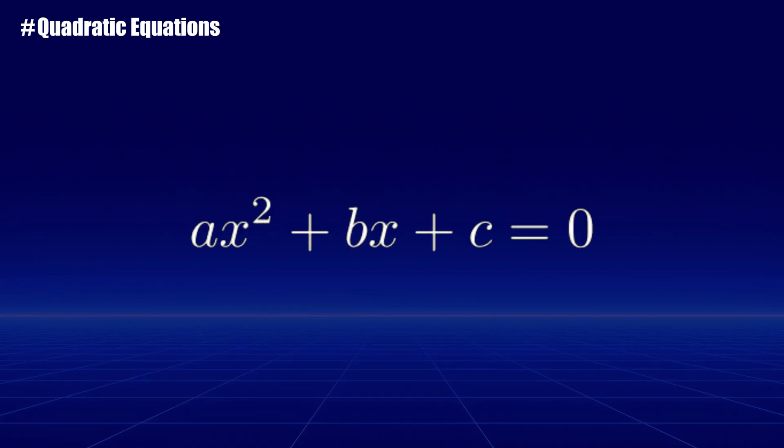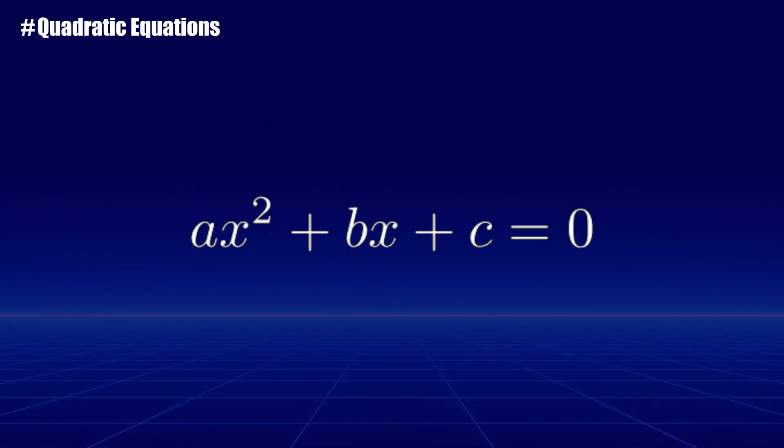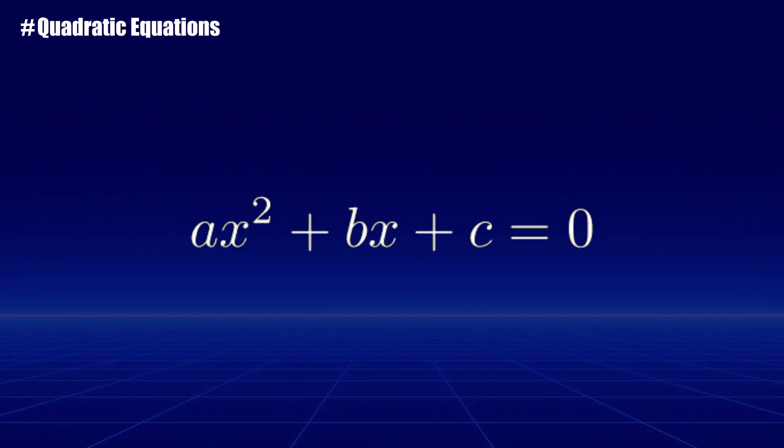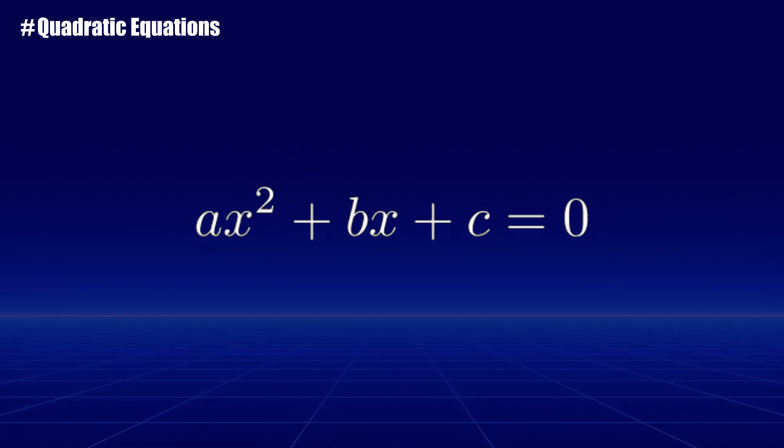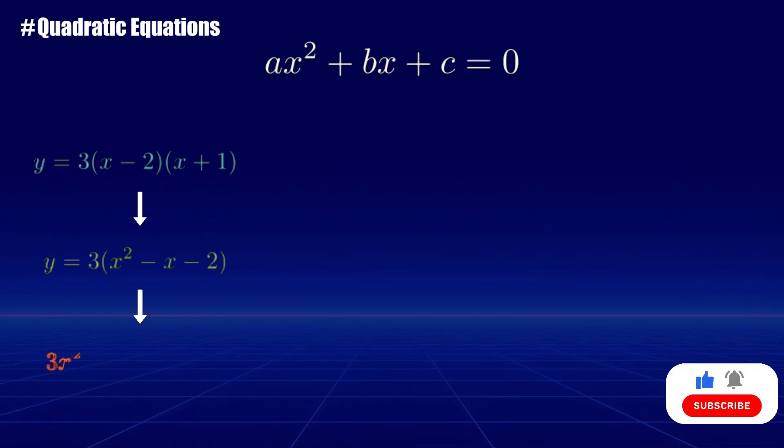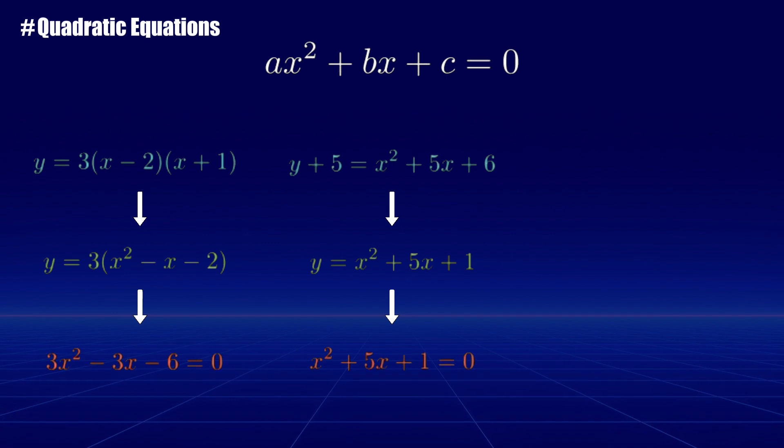A quadratic equation might not be obvious initially, but if you can put it in the form ax squared plus bx plus c equals zero, then it is a quadratic equation. For example, any of the shown equations on the screen is considered a quadratic equation simply because it can be expressed using the quadratic form.